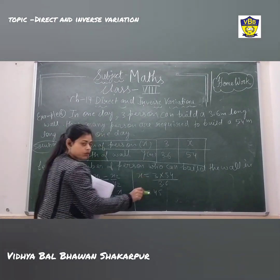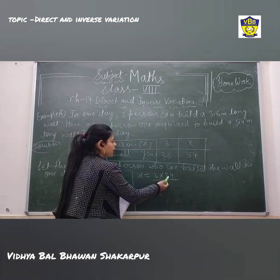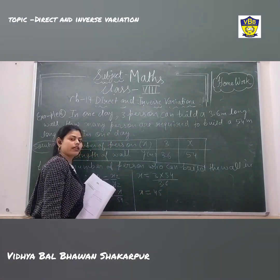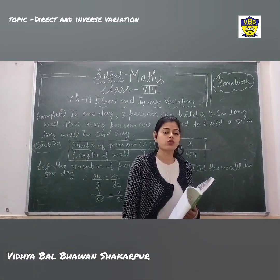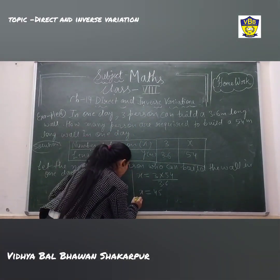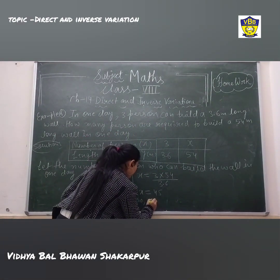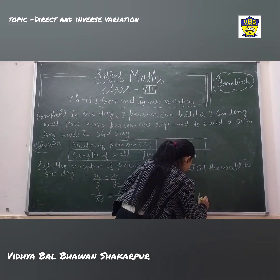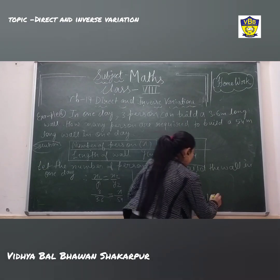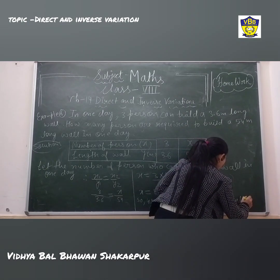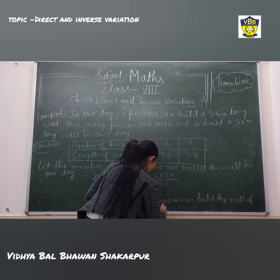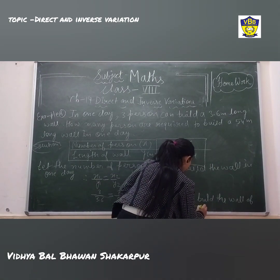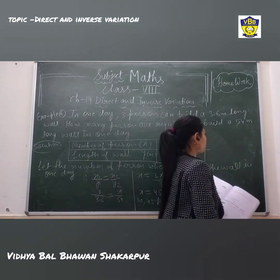Now cross-multiply: 3 multiplied by 54 divided by 3.6. After solving, you get x equal to 45. So 45 persons can build a ball of length 54 meters.